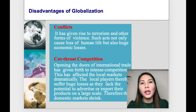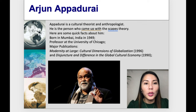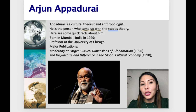We have here Arjun Appadurai, a cultural theorist and anthropologist who came up with the scapes theory. He was born in India in 1949 and is a professor at the University of Chicago. His publications include Modernity at Large, Cultural Dimensions of Globalization, and Disjuncture and Difference in the Global Cultural Economy.